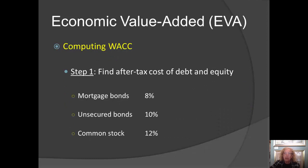The first step in using EVA is to compute the division's weighted average cost of capital. We take the mortgage bonds that have an 8% interest rate and adjust for the fact that mortgage bond interest is tax deductible. Since this firm is in a 40% tax world, the interest on the mortgage bonds will reduce pre-tax income. So those bonds actually cost the firm 60% of the interest rate — the other portion is a tax shelter. Net, they cost the firm 4.8%.